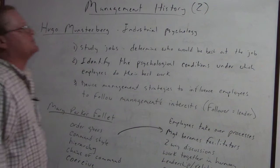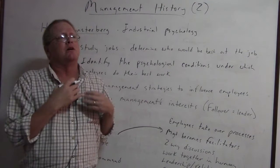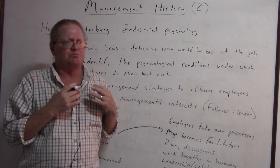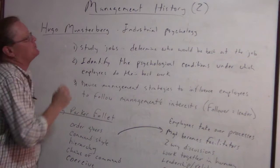Now we have management history part two. We're simplifying things and keeping it basic. Remember we had Frederick Taylor — the 'one best way,' people are machines basically — and then we had Max Weber with hierarchies, impersonality, and things like that. So along comes Hugo Munsterberg, an industrial psychology person.